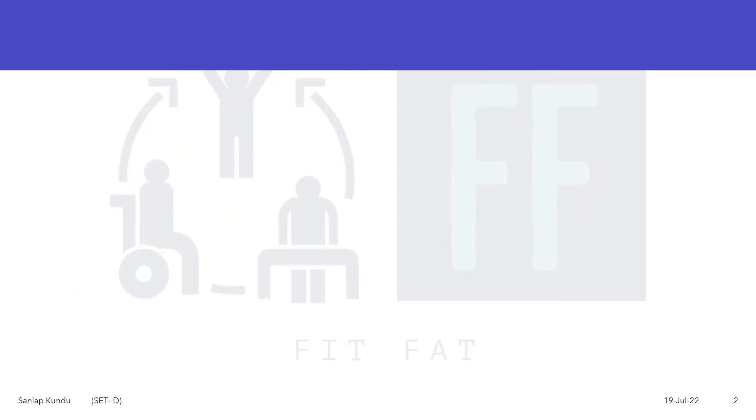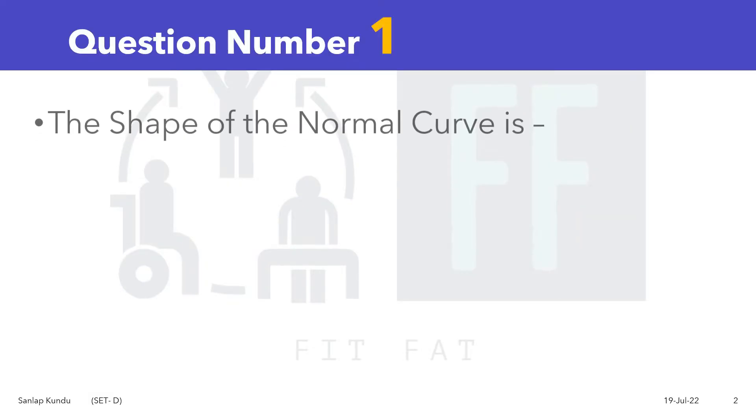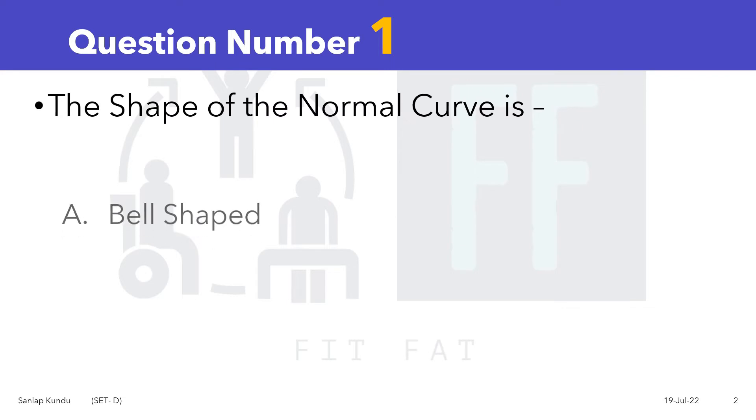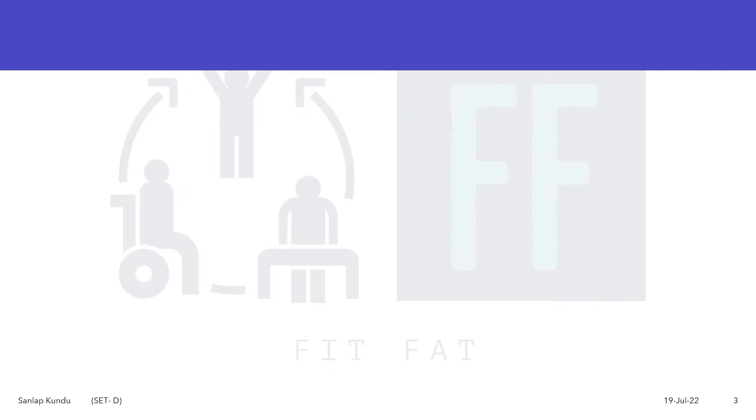Question number one: The shape of the normal curve is - option A: bell shaped, option B: flat, option C: circular, or option D: spiked. This question came from biostatistics and research methodology.